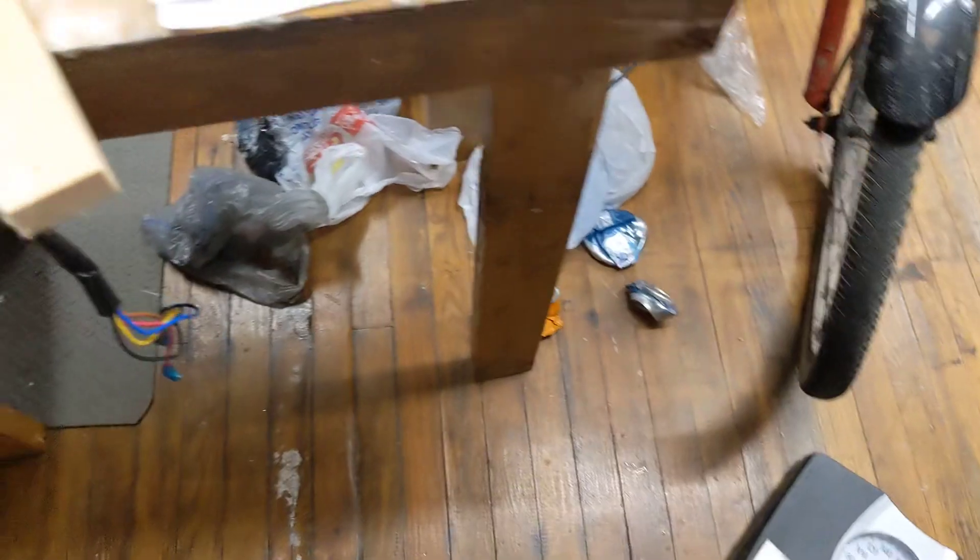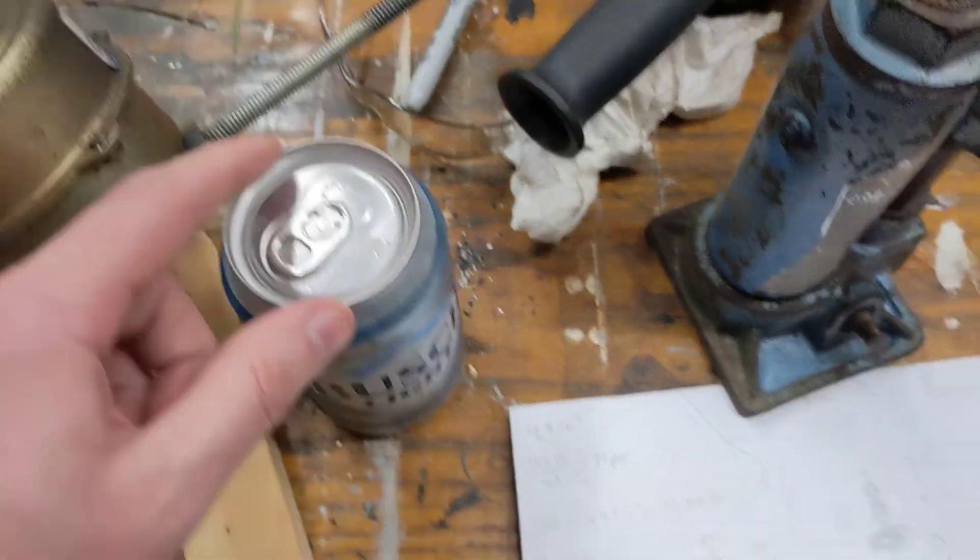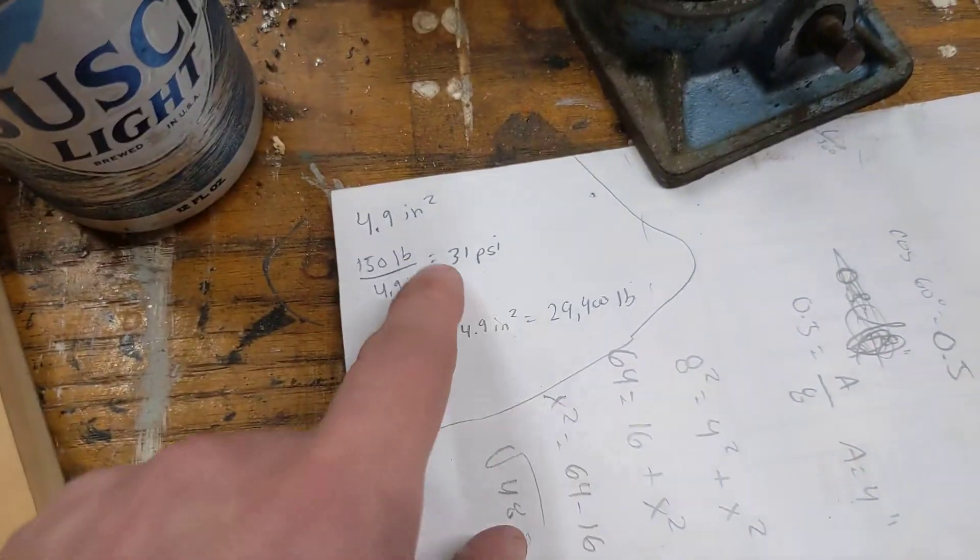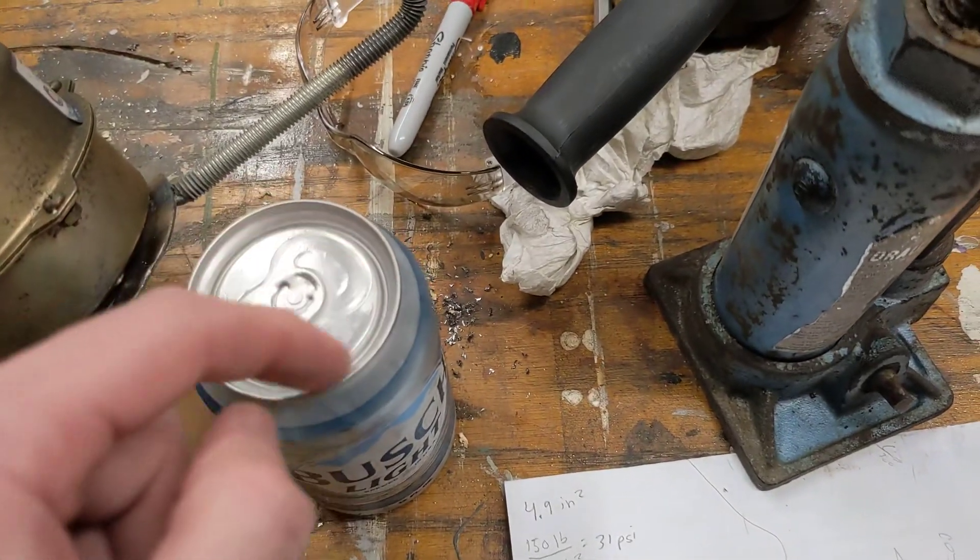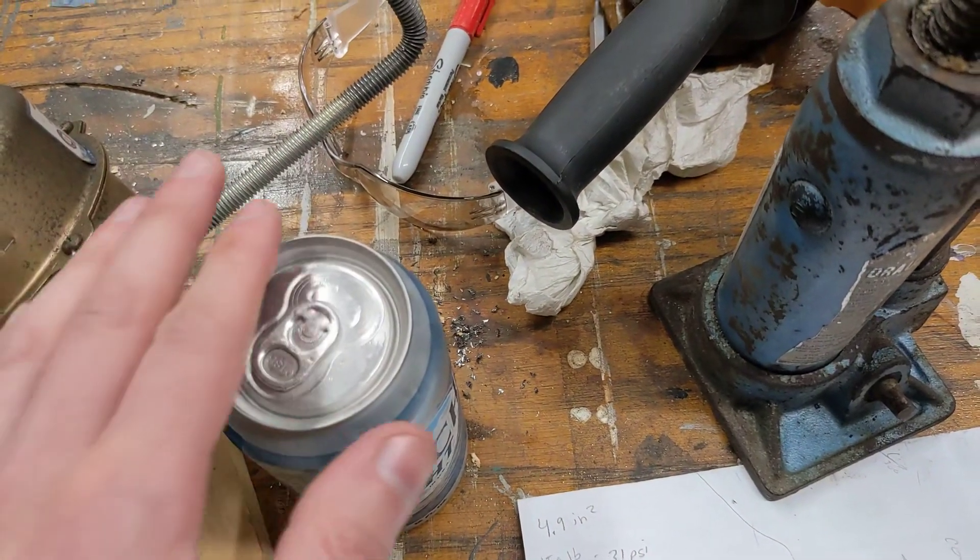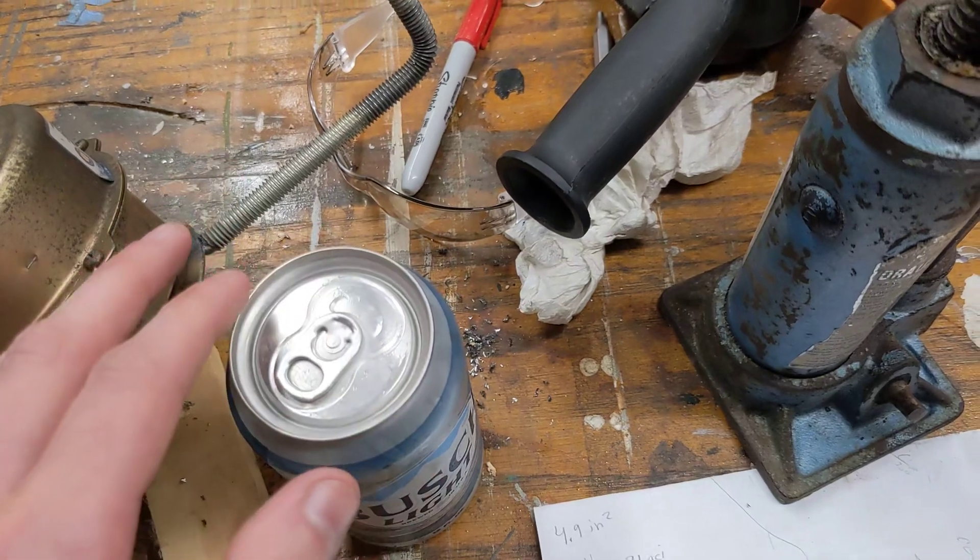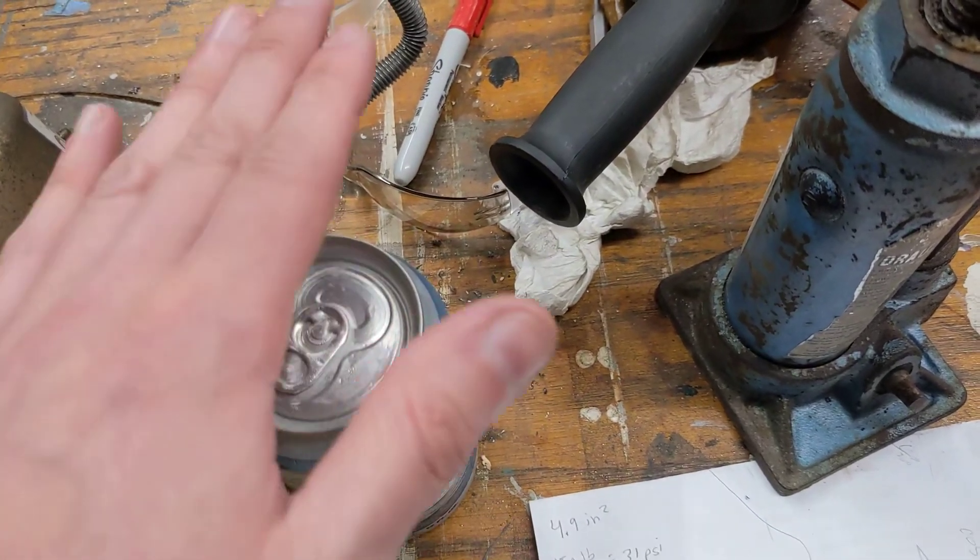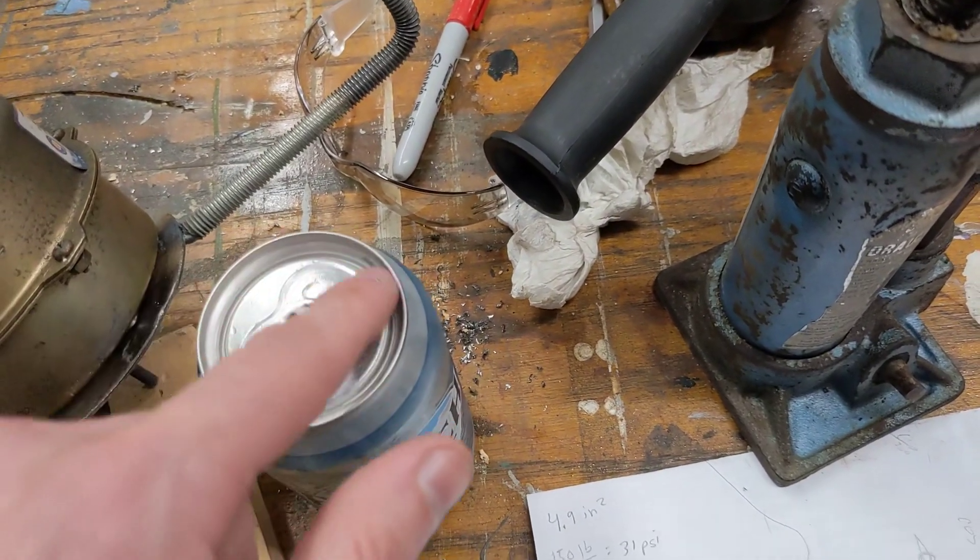So, what we have to realize is the top of these cans, this is about 4.9 square inches of surface area on the top of here. Now, it's not going to be evenly distributed because this is not perfectly flat, but let's just say assume that it is.